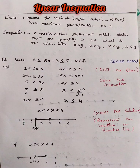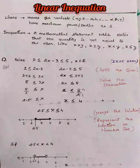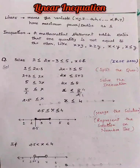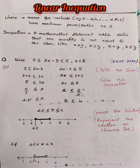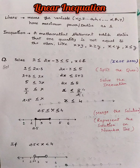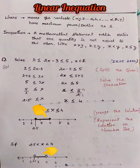If the answer is x > 2.5 and x < 4, that is when the equal-to sign is missing, then instead of dark circles we make hollow circles. Since x belongs to real numbers, all numbers lying between 2.5 and 4 will be highlighted.